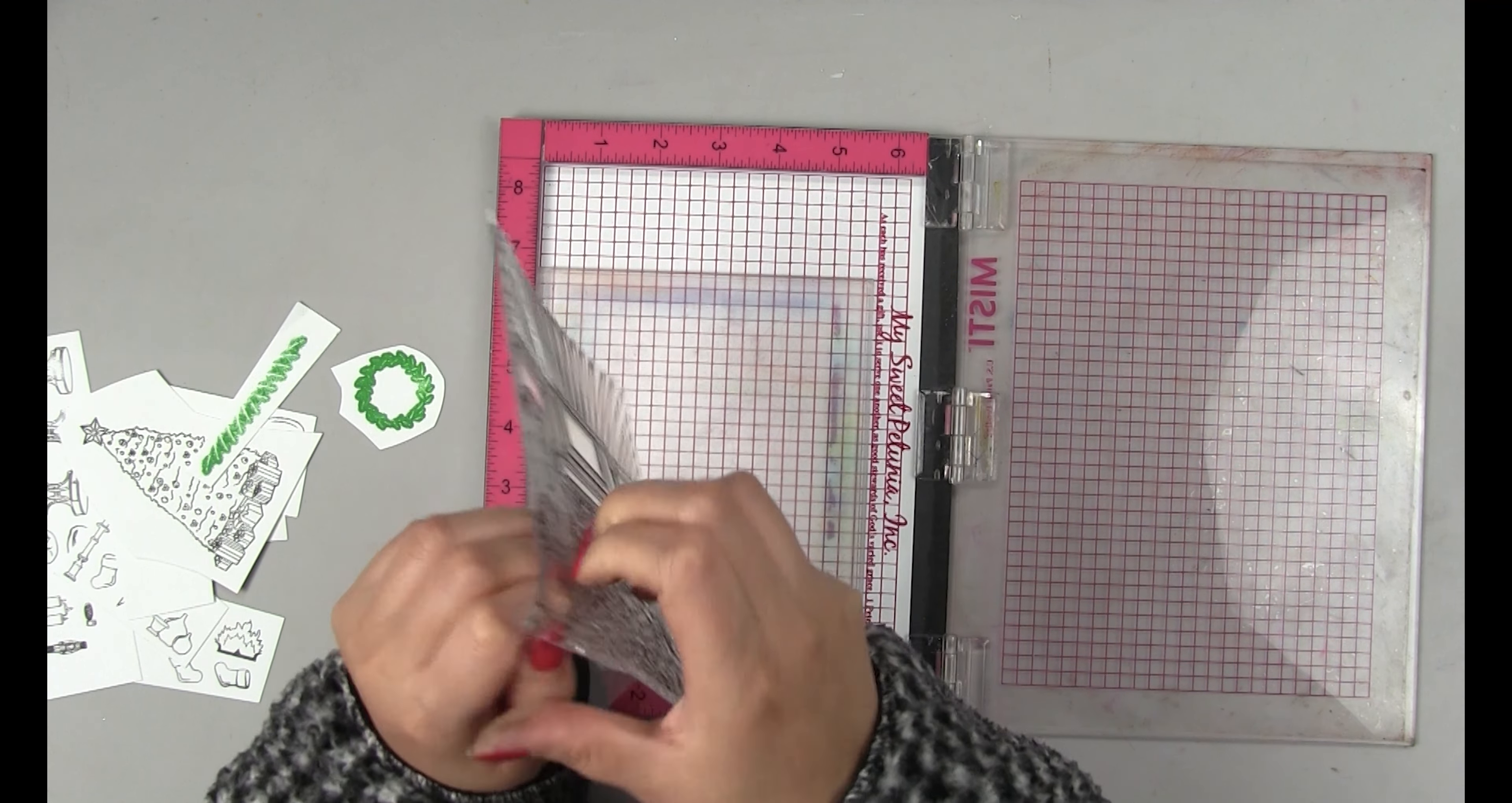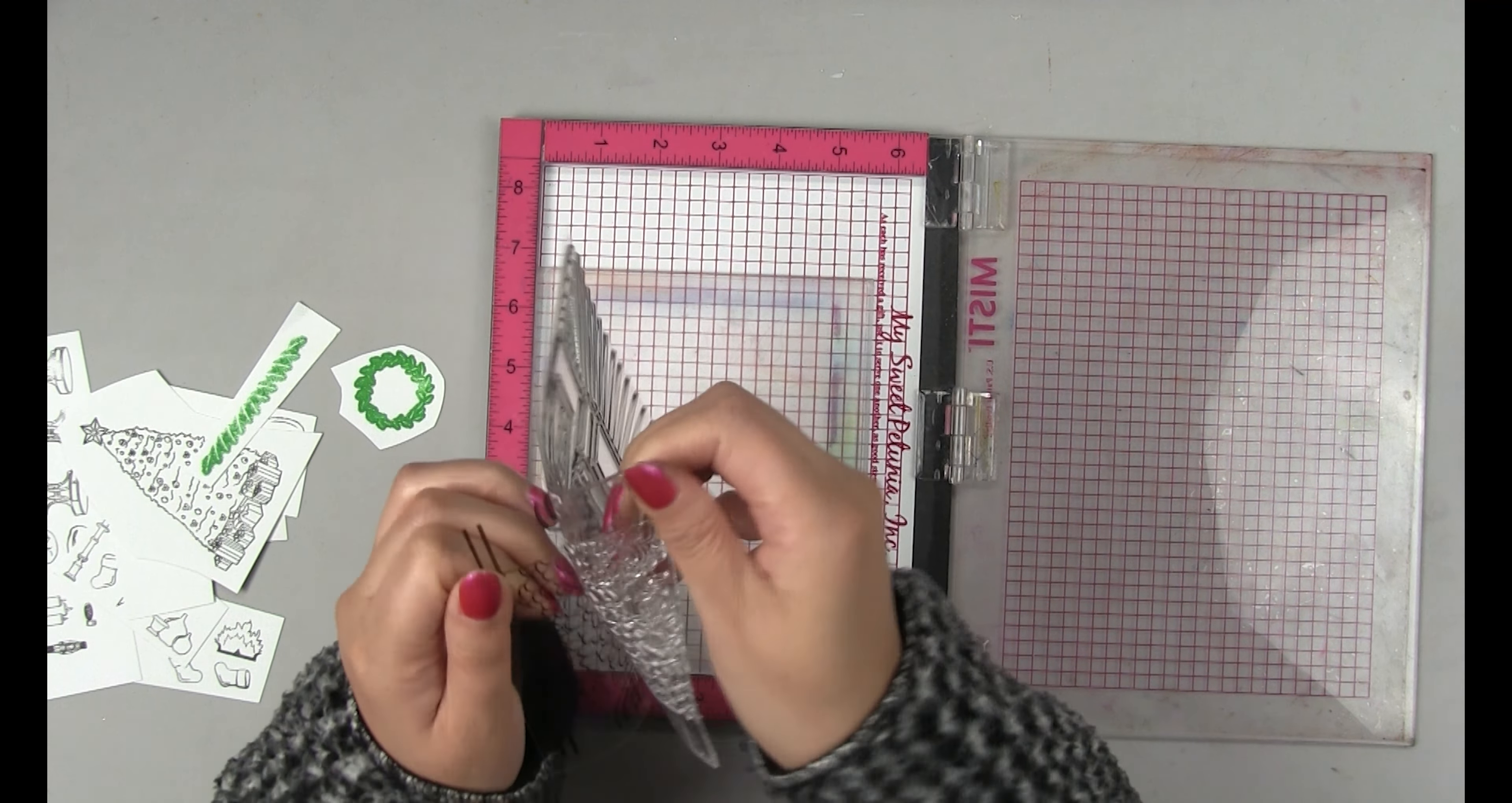Now I'm going to stamp the background fireplace stamp. I placed it right inside my MISTI. The MISTI has our six by seven inch grip mat inside. After I've positioned the background stamp, I placed my A2 cardstock inside the MISTI and it's being held by that grip mat. I'm going to stamp the background in our caviar hybrid ink, which is alcohol marker friendly.